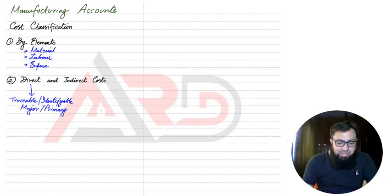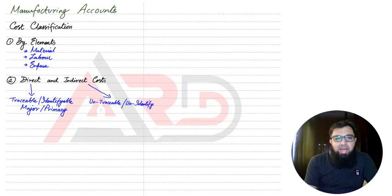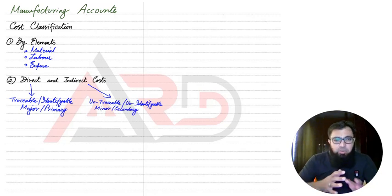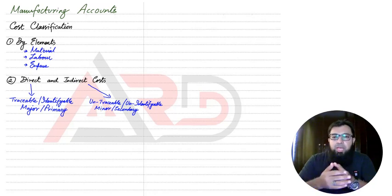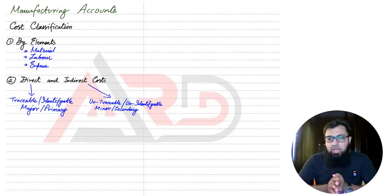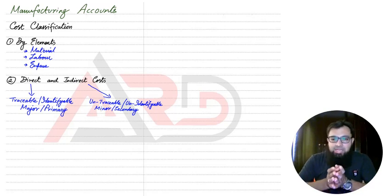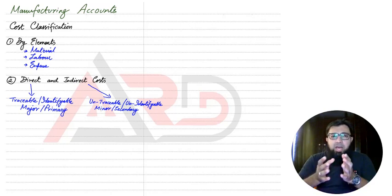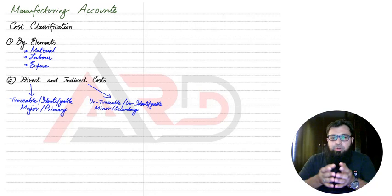Indirect costs are costs that cannot be traced easily — they are untraceable, unidentifiable, and minor or secondary costs. For example, when making a wooden chair, a carpenter can tell you exactly how many kilograms of wood are required for a single chair — so wood is a direct cost. Similarly, a tailor can tell you exactly what length of cloth is required to make a suit, so the cloth is a direct cost.